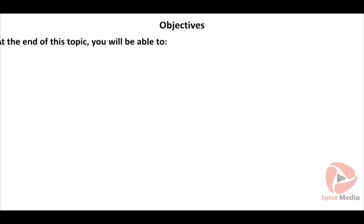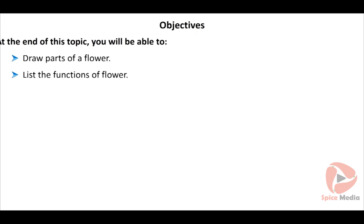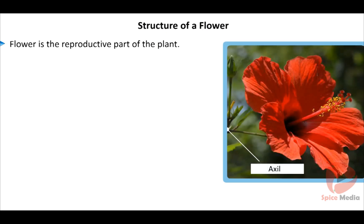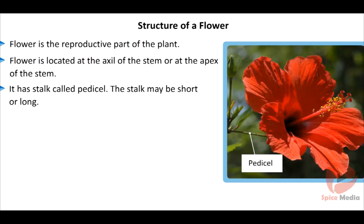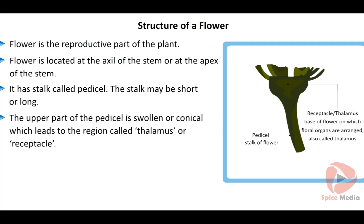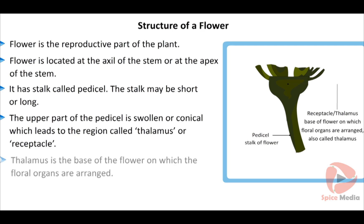At the end of this topic, you will be able to draw the parts of a flower and list its functions. The flower is the reproductive part of the plant, located at the axil or apex of the stem. It has a stalk called the pedicel, which may be short or long. The upper part of the pedicel is swollen or conical, leading to the region called the thalamus or receptacle.